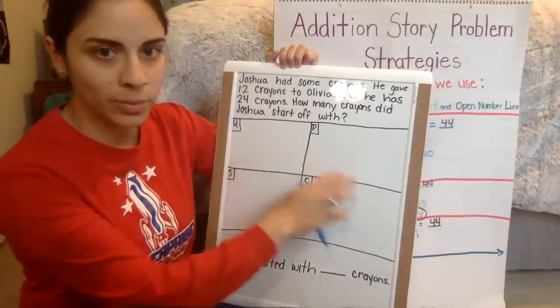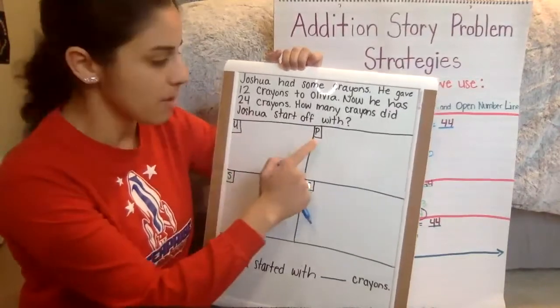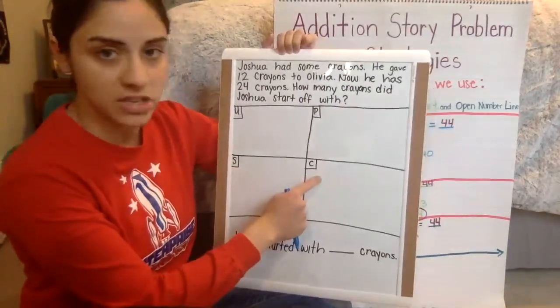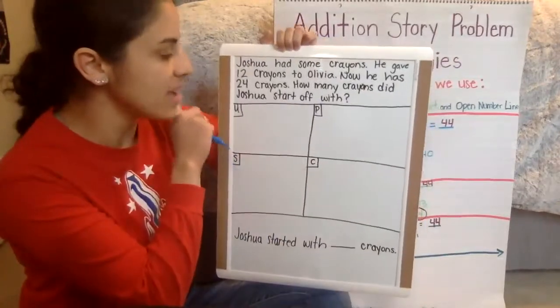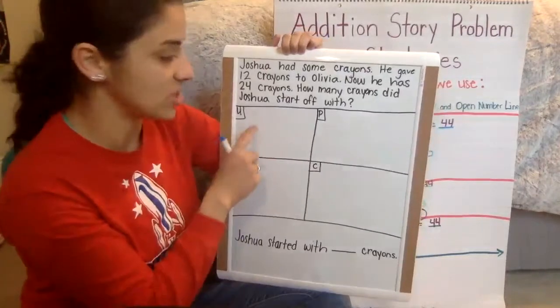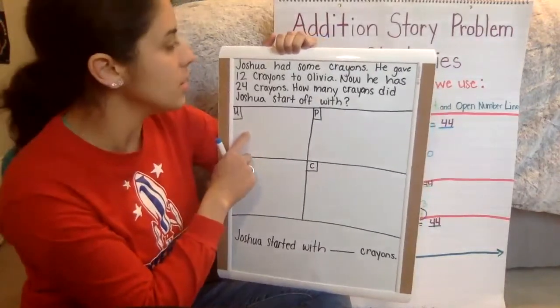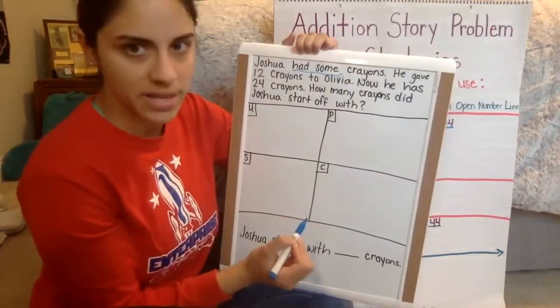Well the first thing, remember we do UPSC. UPSC stands for understand, plan, solve, and then check, solving it a second way to make sure we get the same answer. Okay, so I'm going to underline using a blue marker the important information to make sure I understand the problem. So Joshua had some crayons. We don't know how many some is, okay? So let me put a box around that.